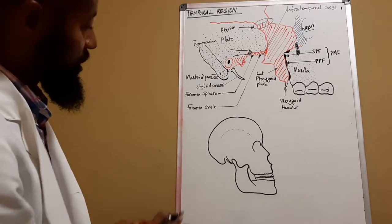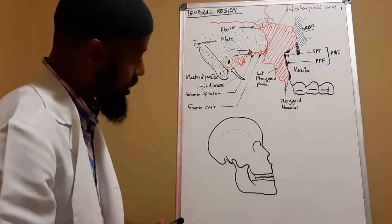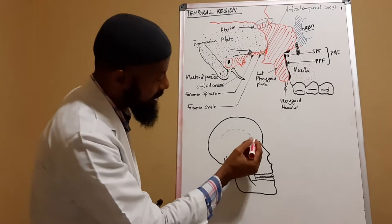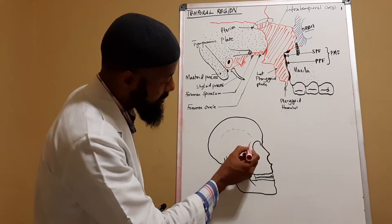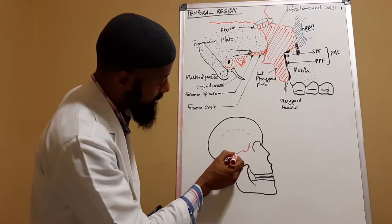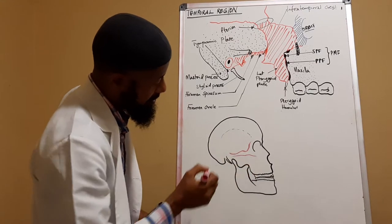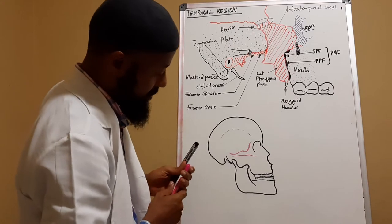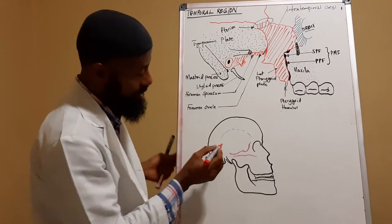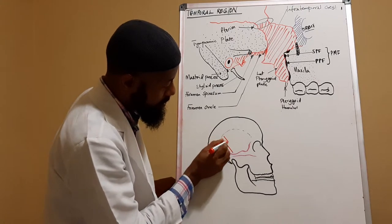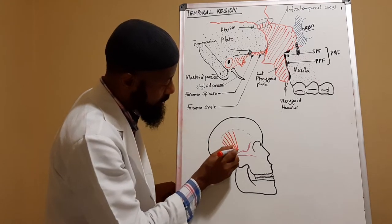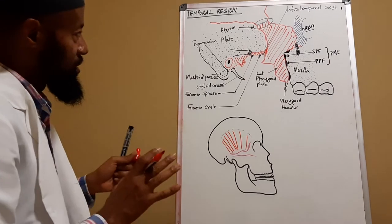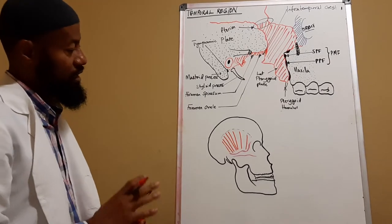I'm going to use a different marker to show the zygomatic bone — that's the zygomatic bone. So what we're saying is that the temporal region is this region here, and it is superior to the zygomatic arch.